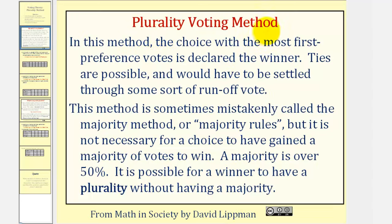The plurality voting method is probably the method you're most familiar with, where the choice with the most first preference votes is declared the winner. Ties are possible and would have to be settled through some sort of runoff. This method is sometimes mistakenly called the majority method or majority rules, but it is not necessary for a choice to have gained a majority of votes to win, where a majority is over 50% of the votes. So it is possible for a winner to have a plurality without having a majority.